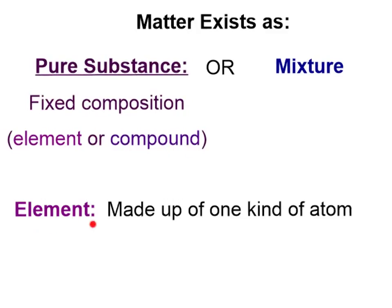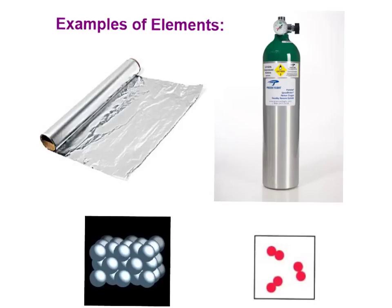Let's look at what an element is first. An element is a substance that is made up of atoms that are all alike — only one kind of atom. Some examples of elements would be aluminum foil, which has only aluminum in it, only one kind of atom.